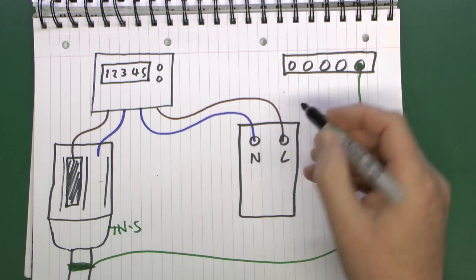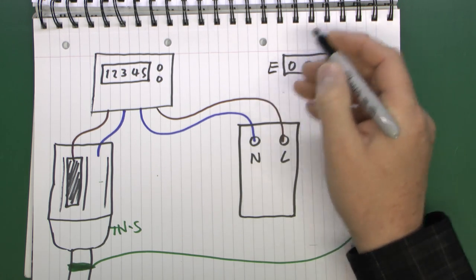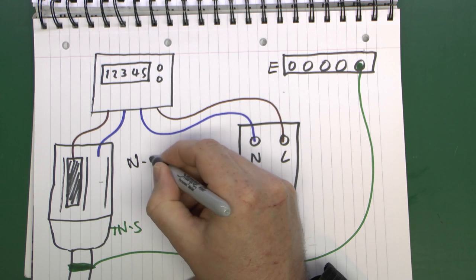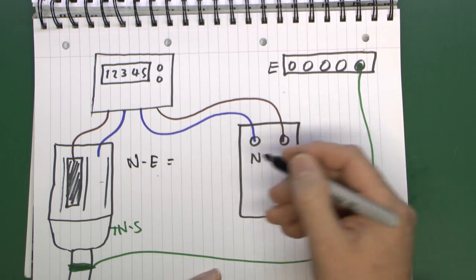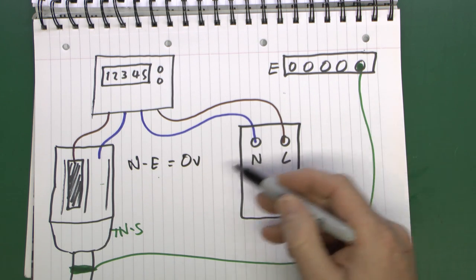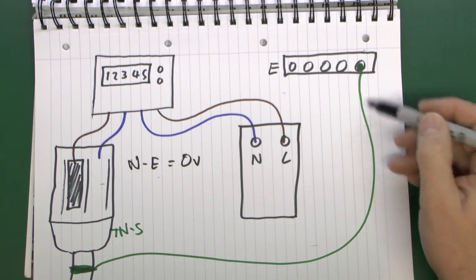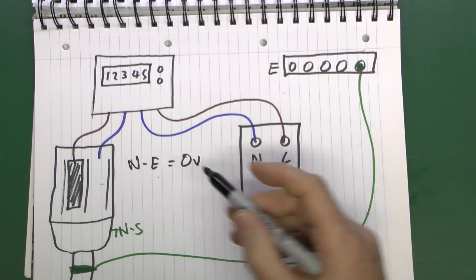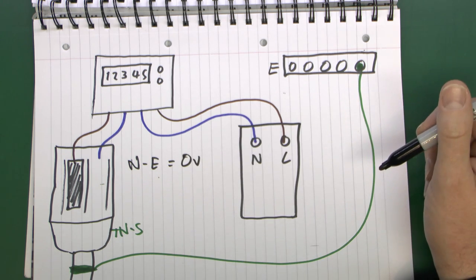So between neutral and the earth connection, you basically should have zero volts or as close to that as practically possible, maybe one volt or something depending on the other circumstances of how the earth is connected, but essentially as close to zero as possible.